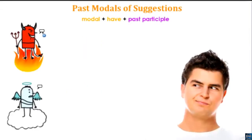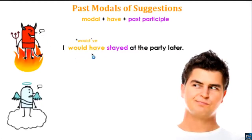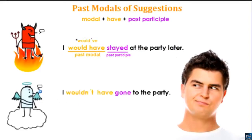The last modal is 'would have' — also a past modal, using the past participle. 'I would have stayed at the party later.' The contraction is 'would've.' Or from his good side: 'I wouldn't have gone to the party.' Again, past modal and past participle. Let's review the three different ways to give suggestions using these modals.